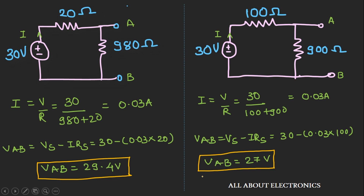As we can see, as the value of the series internal resistance increases, the drop across that series resistance increases, and hence the voltage appearing across the load reduces. So to get the maximum voltage across the load, the value of the series internal resistance should be as low as possible.